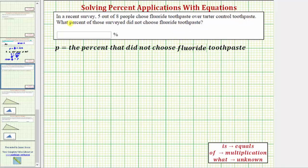Notice how we're asked what percent of those surveyed did not choose fluoride toothpaste, and the given information is about those that did choose fluoride toothpaste. So five out of eight chose fluoride toothpaste. Because eight minus five is three, we know three out of eight did not choose fluoride toothpaste.